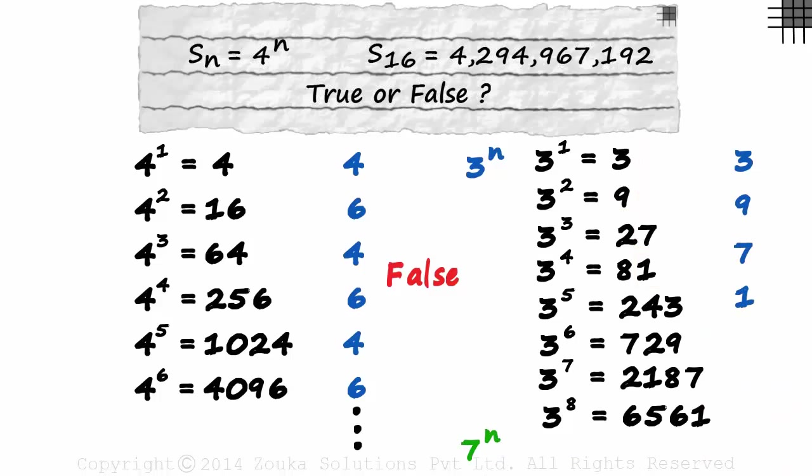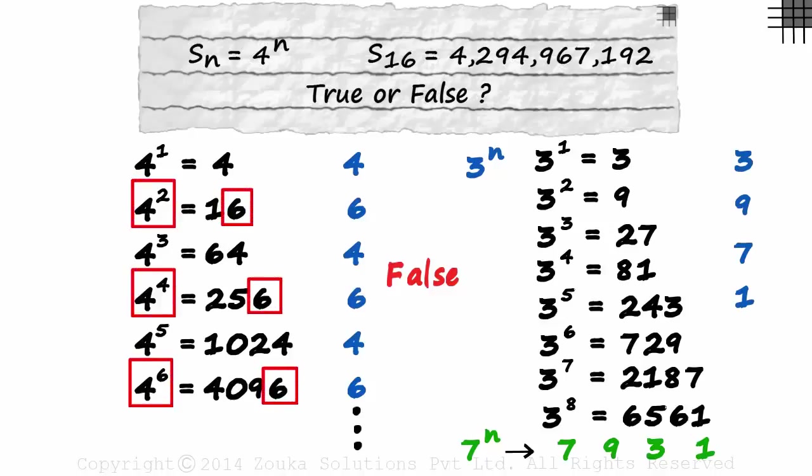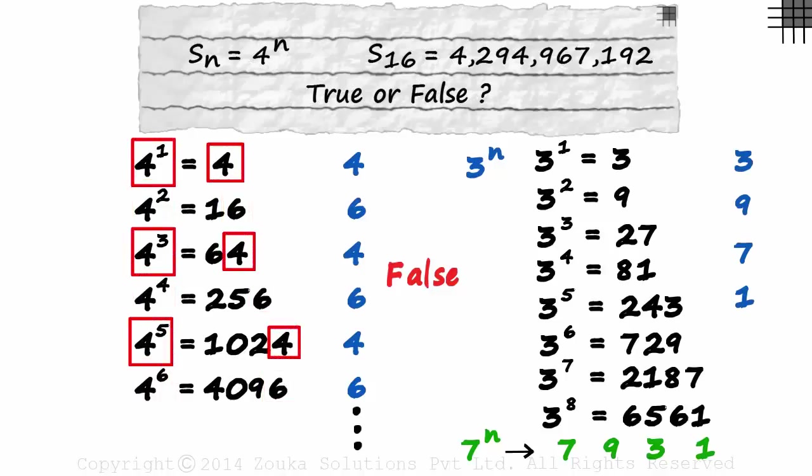Similarly, for 7 raised to n, the pattern of digits in the units place will be 7, 9, 3 and 1. There are a couple of more things we can deduce from this. We can say that even powers of 4 have 6 as the units digit, and odd powers have 4 as the units digit.